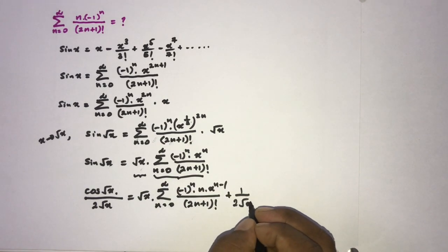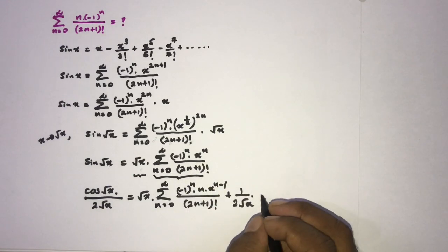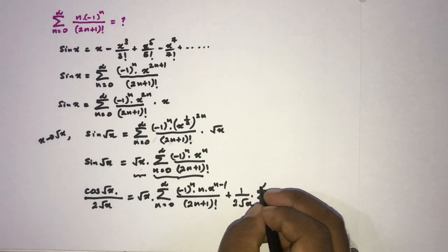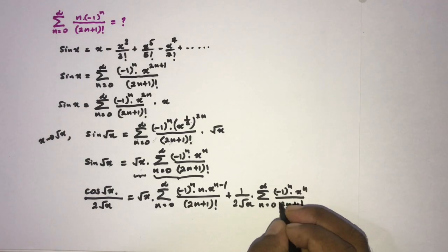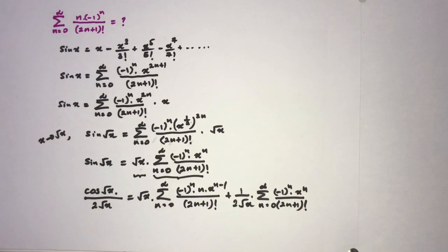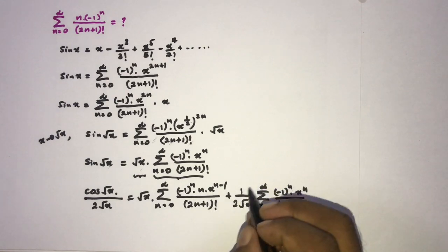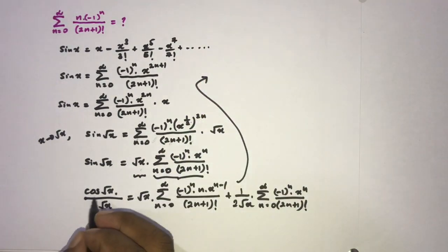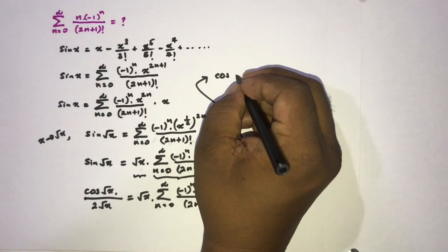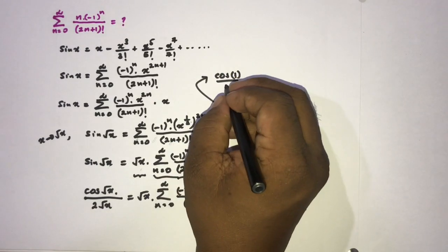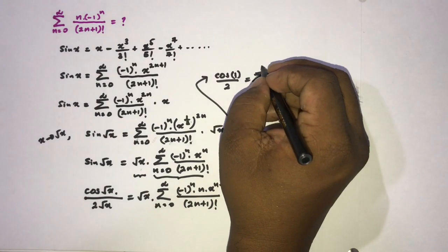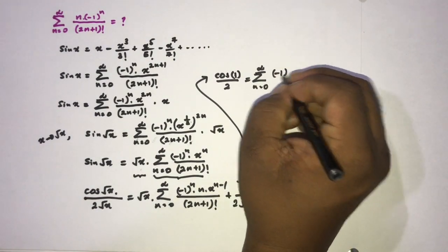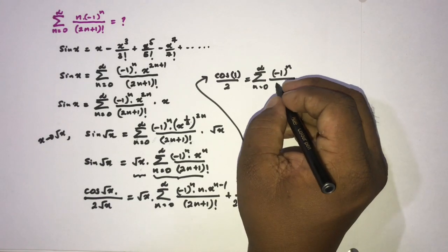Plus the derivative of √x, which is 1 over (2√x), times the second function — the sum from zero to infinity of (-1)^n times x to the n over (2n+1) factorial. Now I'm going to plug in x equals 1. On the left side we get cos(1) over 2, and on the right side we get the sum from zero to infinity of (-1)^n over (2n+1) factorial.